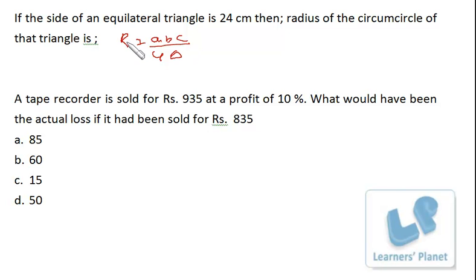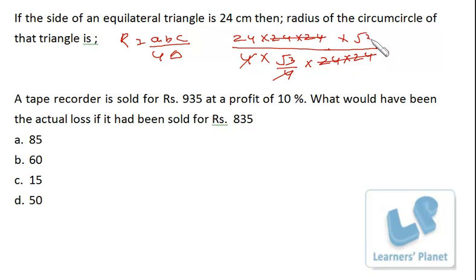So ABC will be same because it is an equilateral triangle, so I put 24 into 24 into 24 by 4. Equilateral triangle area is root 3 by 4 into side square. Side is 24. 4 and 4 is cancelled, 24 and 24 is cancelled into root 3 by root 3. This is 3, 8. So radius is 8 root 3.